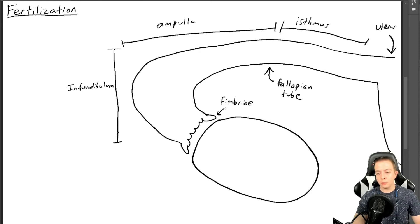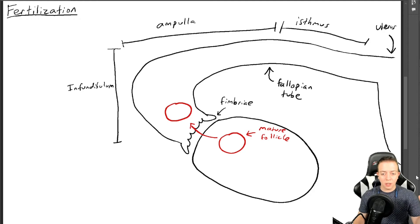The ovary is going to make a follicle which is going to be mature at this point. The mature follicle is going to be ovulated into the fallopian tube. It's going to be picked up by the fimbriae, but funny thing here is that the fimbriae don't actually connect directly to the ovary.